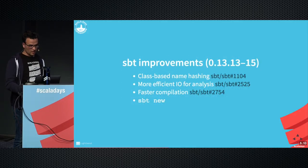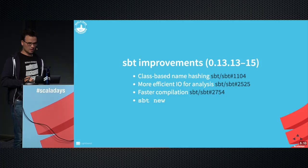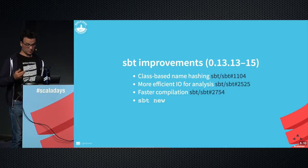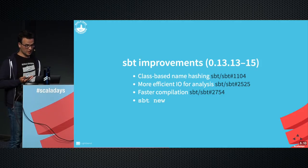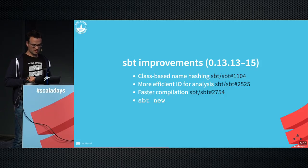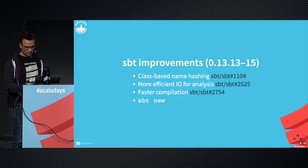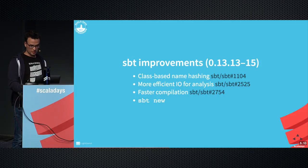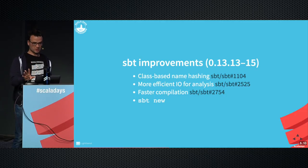There were a lot of SBT improvements. The SBT and Scala teams are at the same company, so it makes sense to work more closely together. Class-based name hashing enables faster incremental compilation; there are more efficient I/O operations and smarter compiler reuse. SBT new is the replacement for Activator.